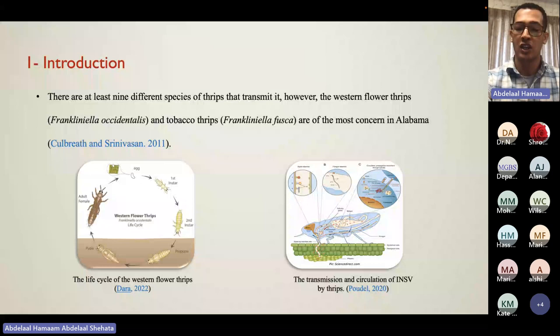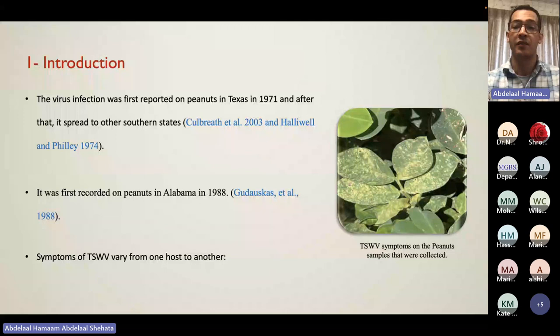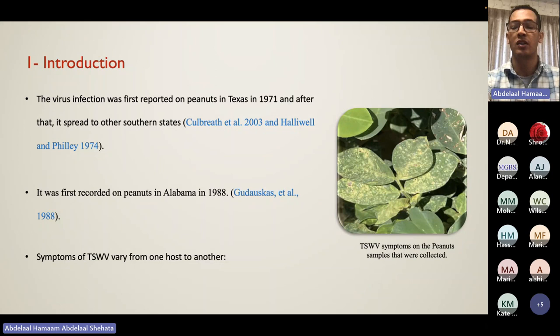When thrips emerge as adults and feed on a healthy plant, they produce saliva which helps the insect digest minerals from the plant, and the virus uses the saliva as a pathway to enter the healthy plant. The virus was first reported on peanut in Texas in 1971 and in Alabama in 1988. Symptoms can vary by host — on peanut, you can see yellow ring spots, while on tomato, the main host, you see necrotic spots.